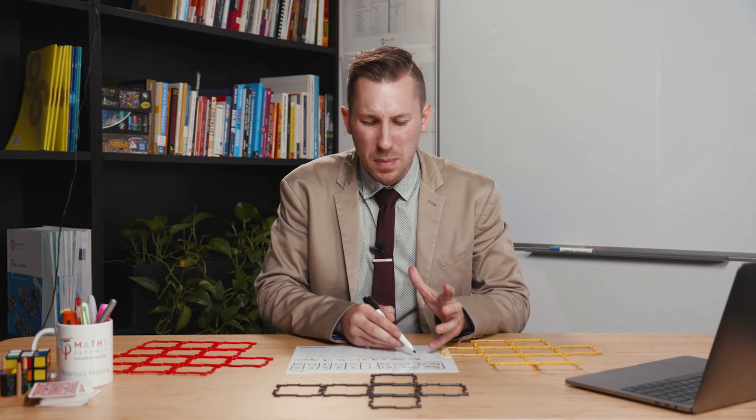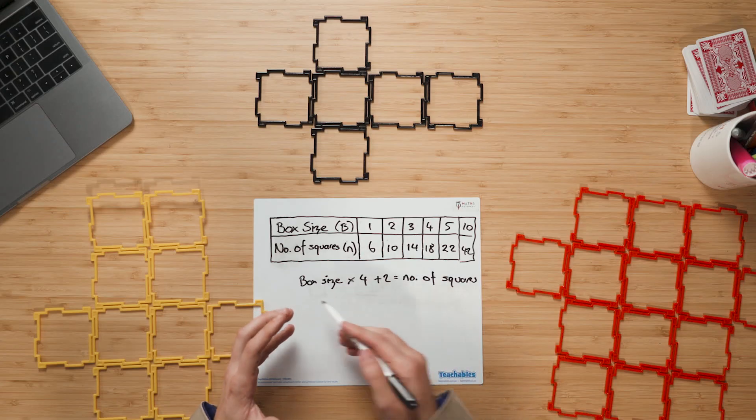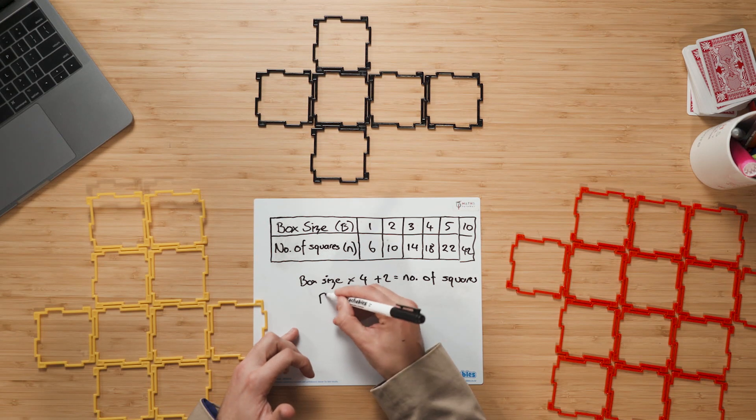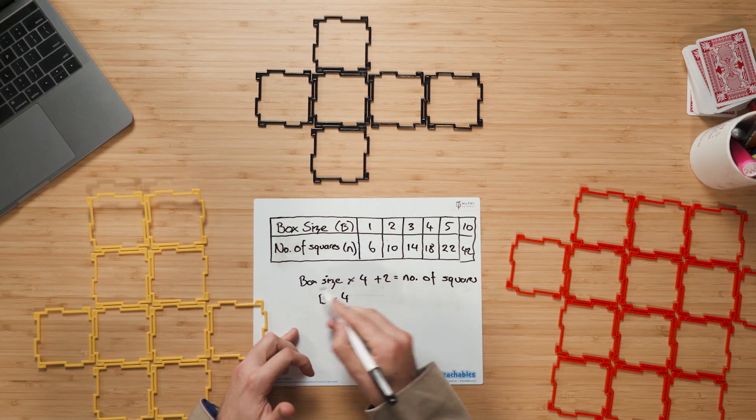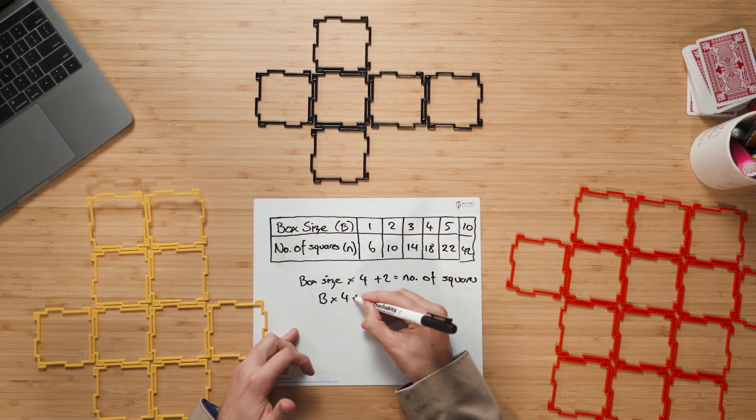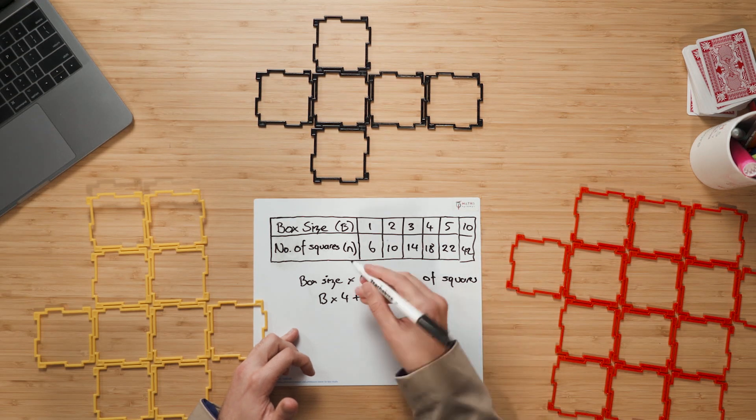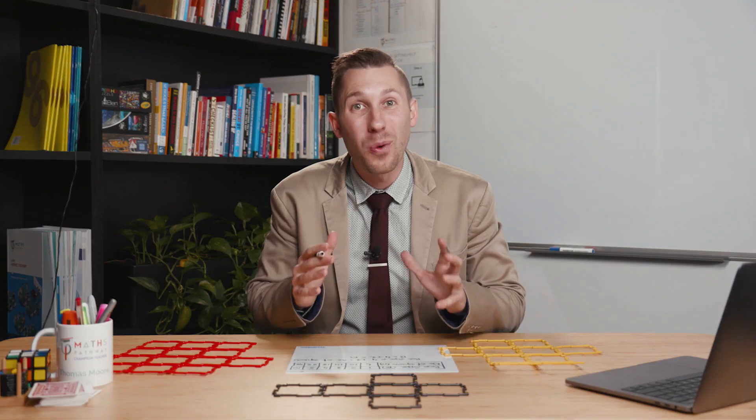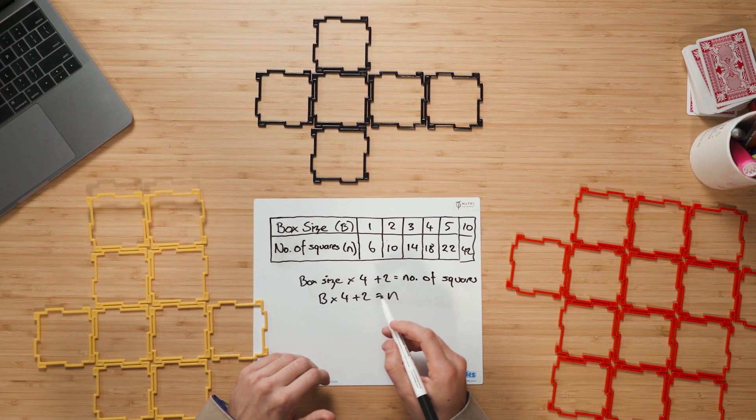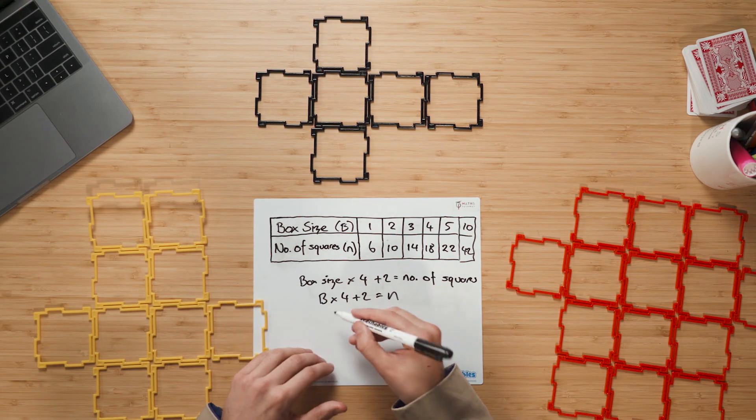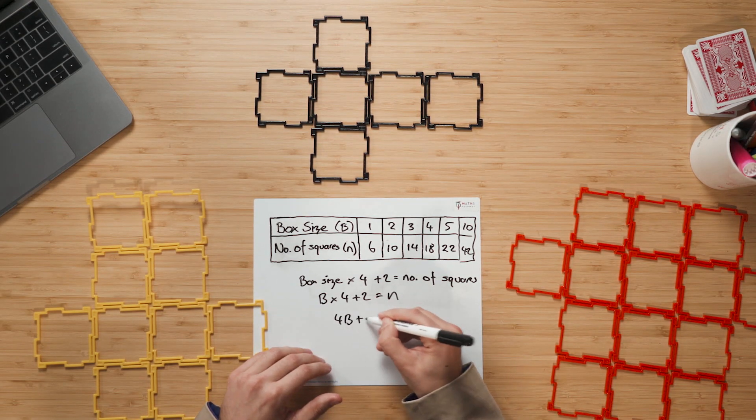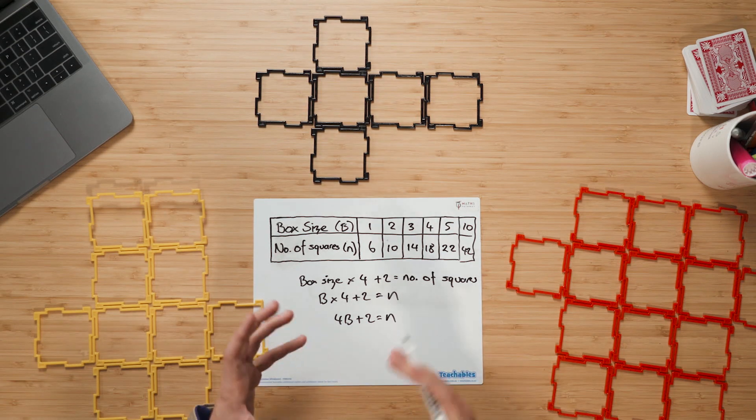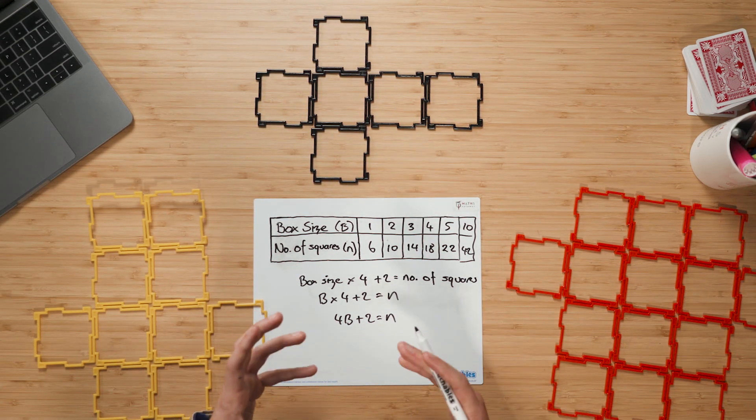From here, all we need to do is get students to recognize that box size and number of squares, we can really save time on writing this. So instead of writing box size here, we can just say B times four, because box size we've now called B, plus two is equal to number of squares, which we called N. And now we're dealing with algebra. We can obviously rearrange and simplify this as well, to write 4B plus 2 is equal to N. And we're starting to get students to see how we simplify things.